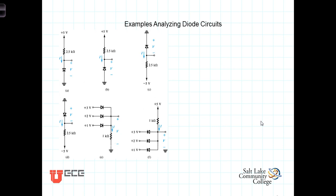In this video we're going to work through a few examples showing the technique of analyzing diode circuits, which involves first determining whether the diode is going to be conducting or not, and if so, what the voltages and currents will be surrounding it. To do this type of quick analysis, we'll use the ideal diode model.